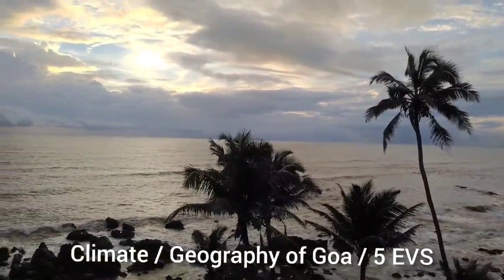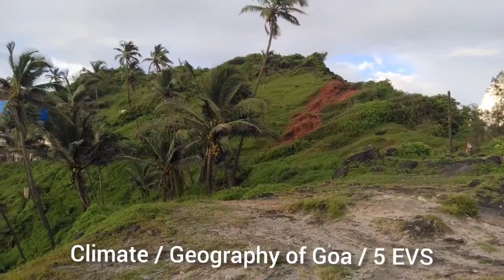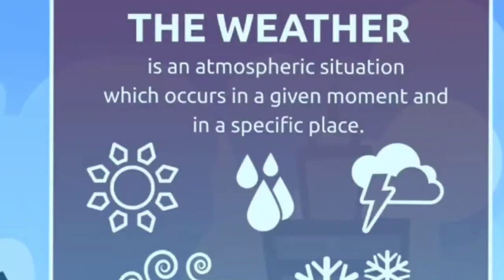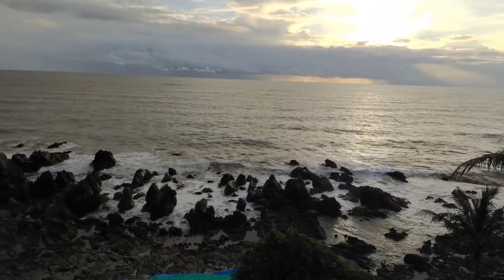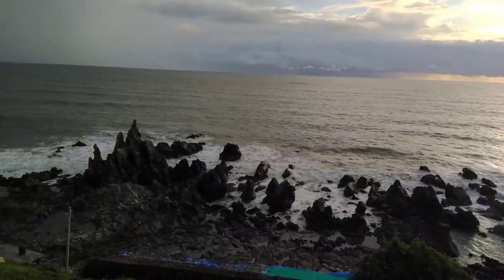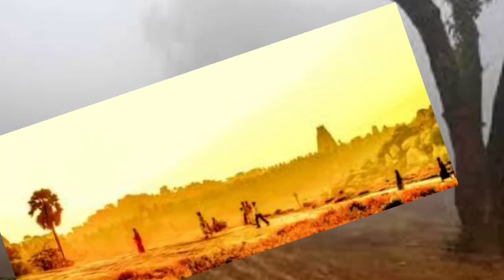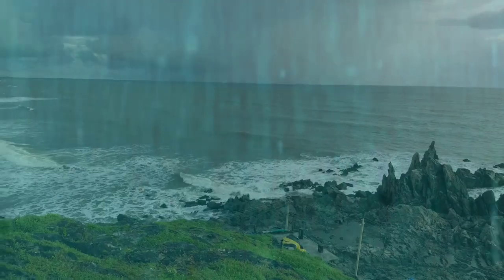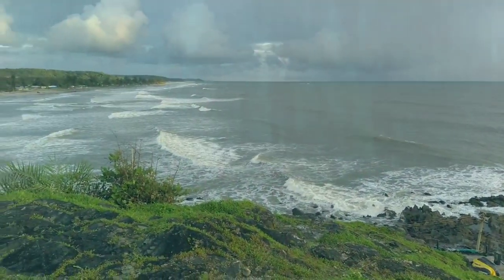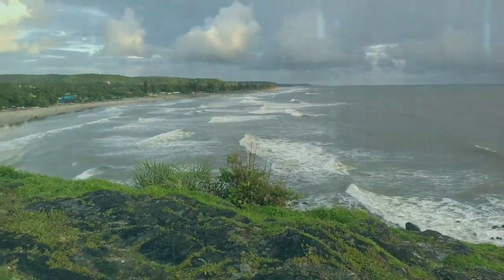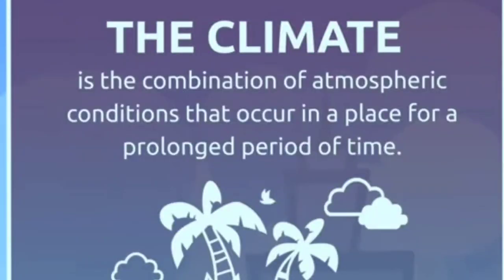Climate and weather are closely related to each other but are different concepts. Weather is an atmospheric situation which occurs at a given moment and in a specific place. Look outside and observe what type of weather it is today - is it cold or hot, is it rainy, cloudy, or windy?